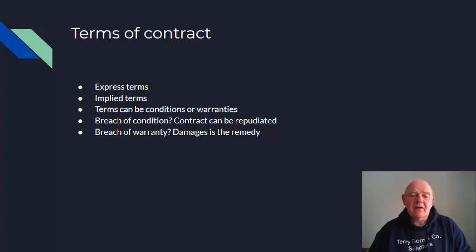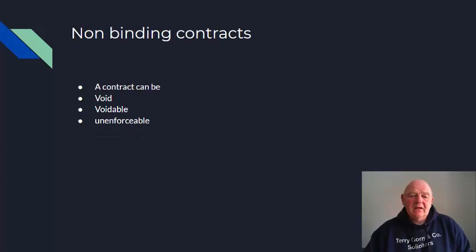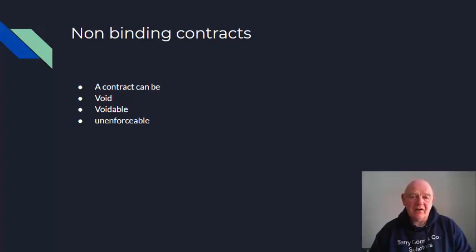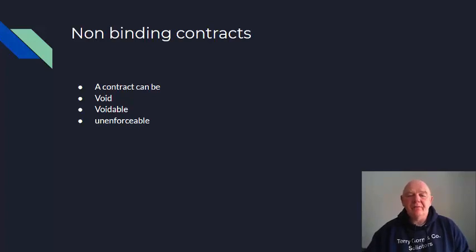Terms of a contract can be conditions or warranties. If a condition is breached, the contract can be repudiated and set aside. If a warranty is breached, damages is the appropriate remedy for the aggrieved party. A contract can be void, voidable, or unenforceable. If two parties enter into a contract under a completely obvious misunderstanding or fundamental mistake, the contract is simply going to be unenforceable. A voidable contract may be one which a minor or someone under a disability has entered into.